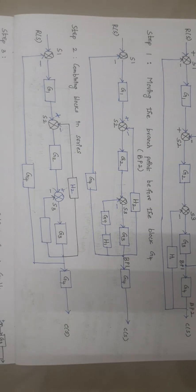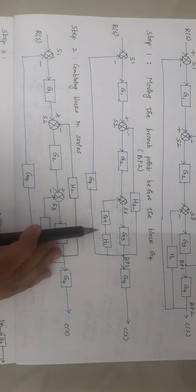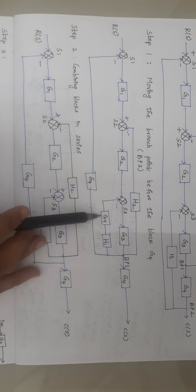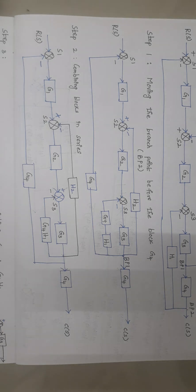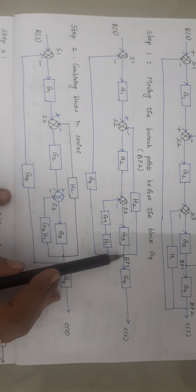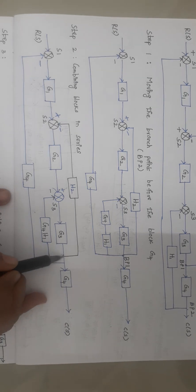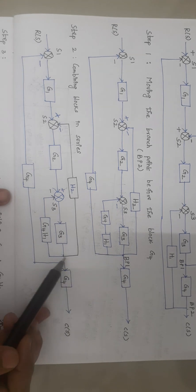The second step is combining blocks in series. Here I have two blocks, G4 and H1, which are in series combination. Combining blocks in series means we multiply the elements, giving us G4 × H1. Also, I am splitting the two branches as individual branches, connecting them to branch point 1 since both have the same meaning.